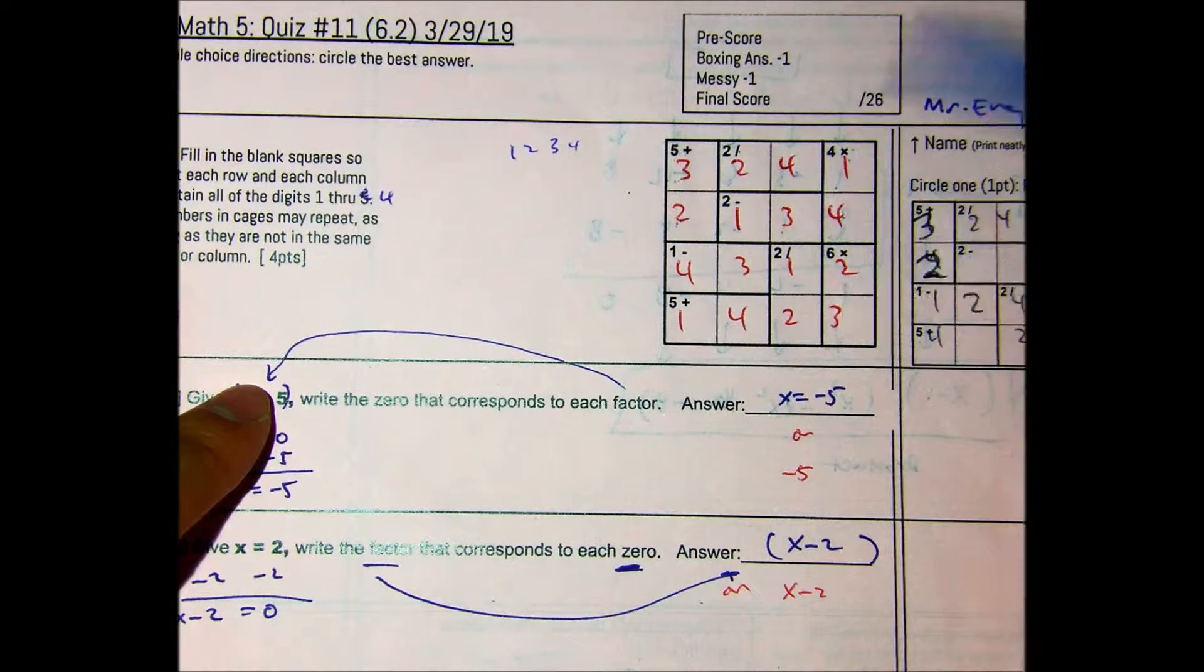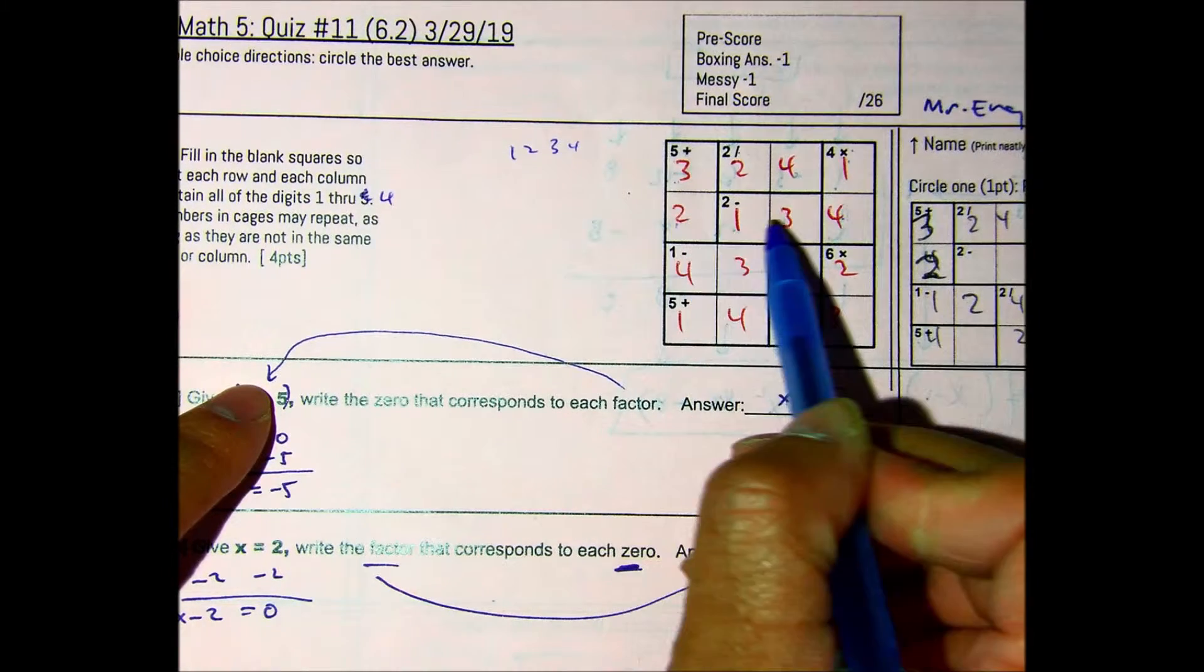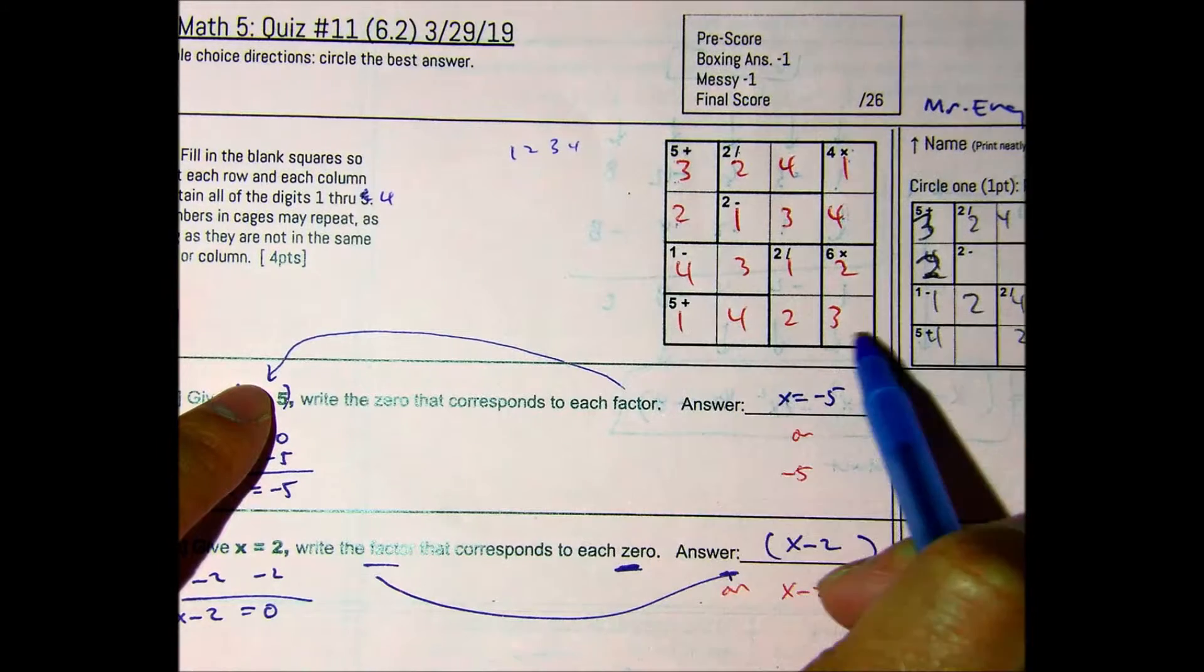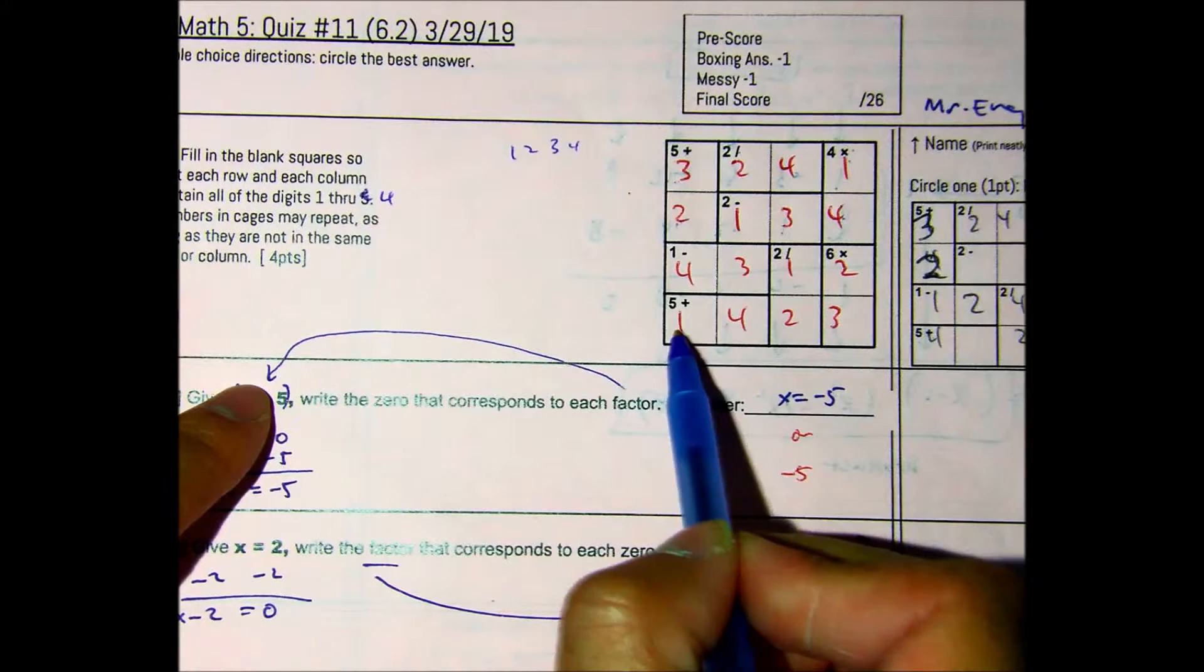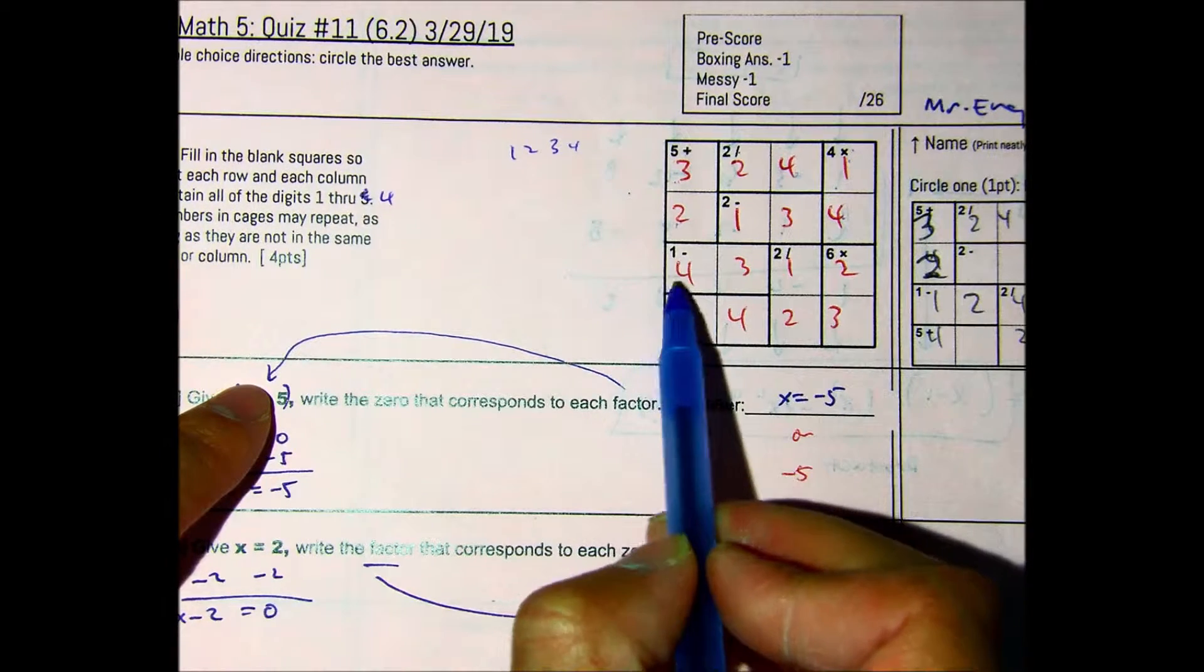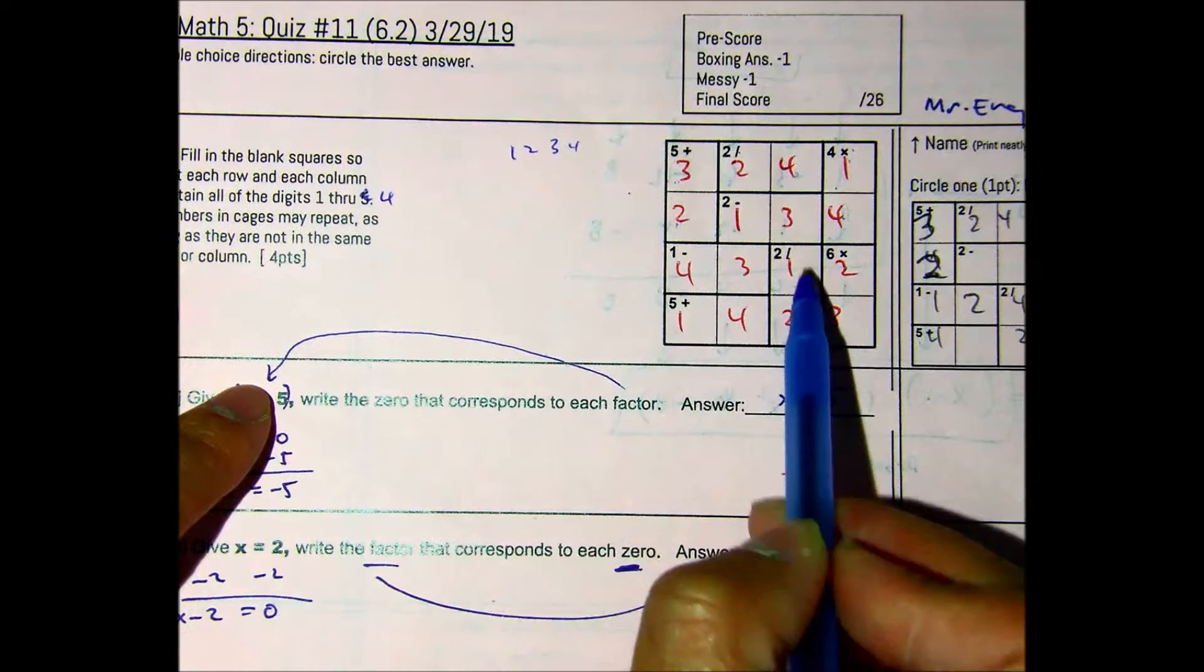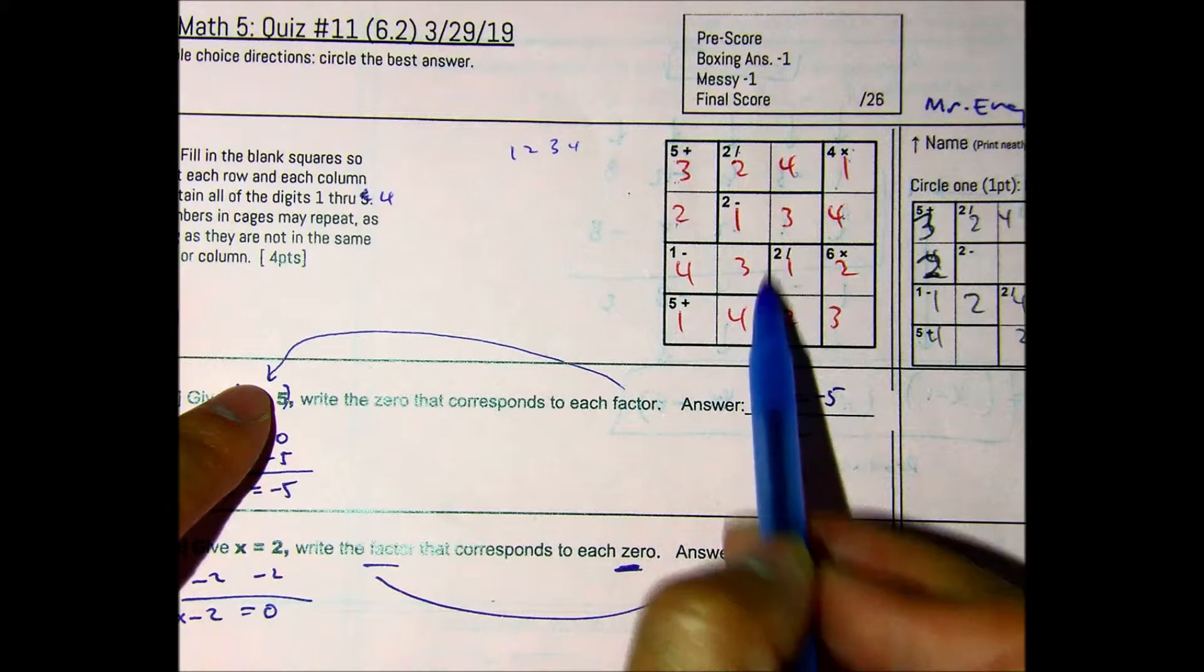And then this is how you check your answer if you did it correctly. You should be doing those in pencil. You just go through each column. It has the numbers 1 to 4, 1 to 4, no repeating numbers. 1 to 4, no repeating. Numbers 1 to 4, no repeating. Numbers 1 to 4. And then you can check each of the cages. 1 plus 4 is 5, 4 minus 3 is 1, 2 divided by 1 is 2, 2 times 3 is 6.